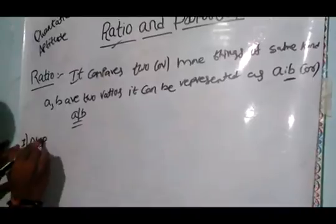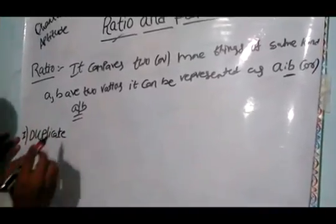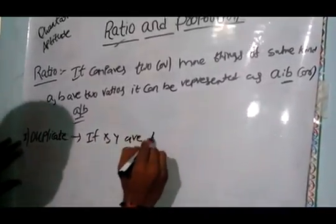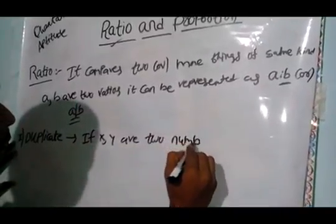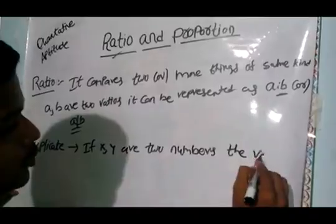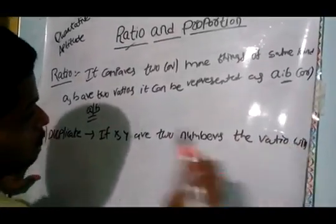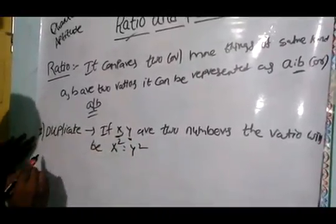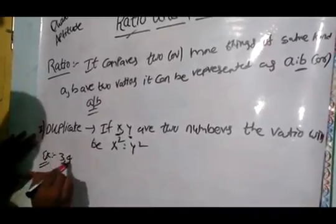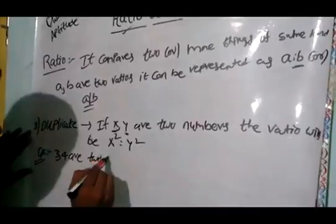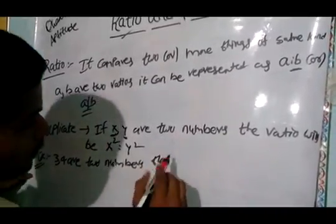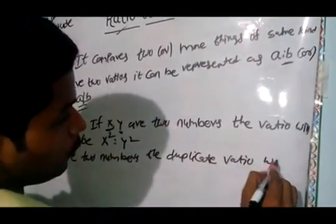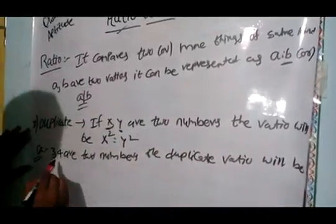First one is duplicate ratio. In this duplicate ratio, if X, Y are two numbers, the duplicate ratio will be X square is to Y square. That means square of these quantities. Take an example: three, four are two numbers, then duplicate ratio will be simply square of these numbers - three square is to four square, that means nine is to sixteen.